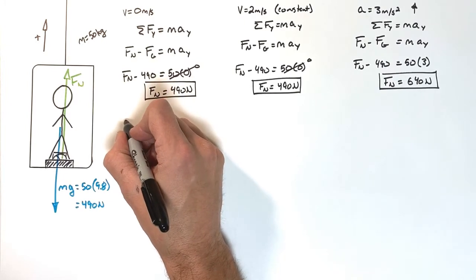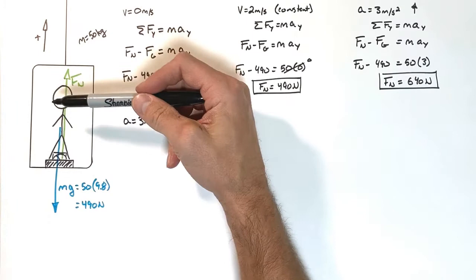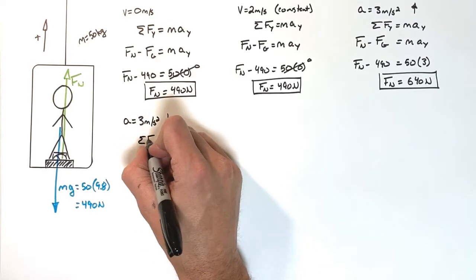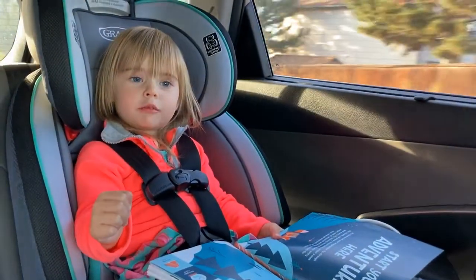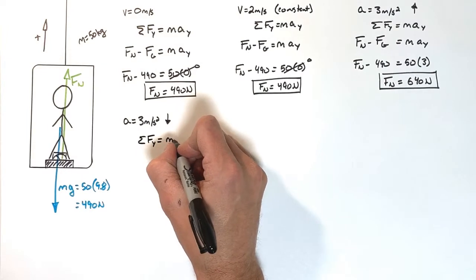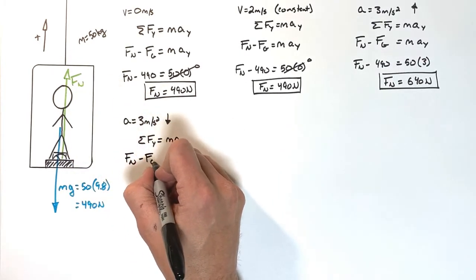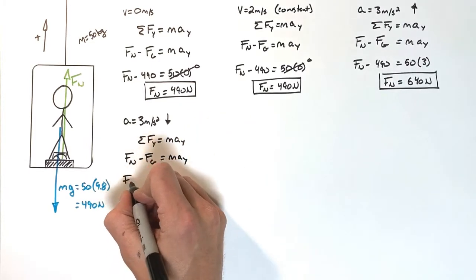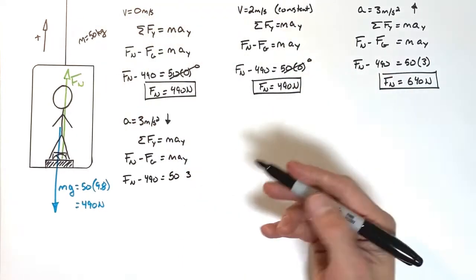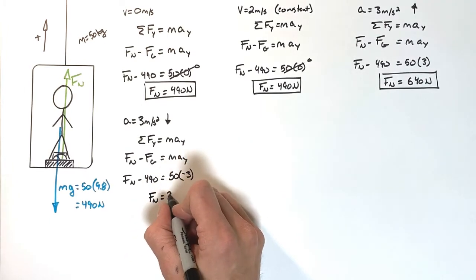Let's do another situation where the acceleration is 3 meters per second squared downward. This could be the elevator moving up and slowing down, or the elevator starting on the top floor and accelerating downward. Newton's second law still applies. We have Fn minus 490 equals 50 times the acceleration, but upward is positive, so the downward acceleration is negative 3. Solving for Fn, we find that Fn equals 340 Newtons.